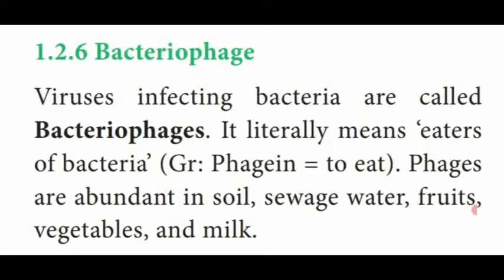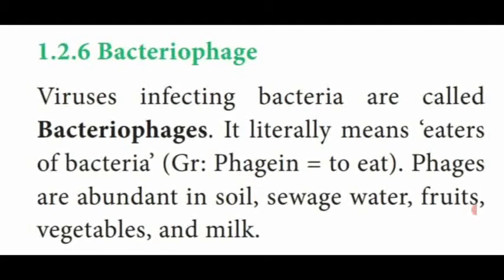Bacteriophages are located in soil, sewage water (drainage water), fruits, vegetables, and milk. Some bacteria convert milk into curd, and fruit juices are modified into a sour taste — these processes also involve bacteriophage activity. So the habitat of bacteriophage — meaning its living place — is soil, sewage water, fruits, vegetables, and milk.